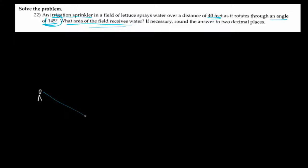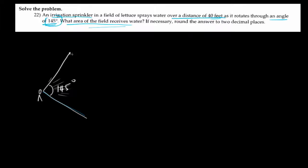Let's say this is an irrigation sprinkler. So it begins to spit out water. We're told that it sprays the water over a distance of 40 feet as it rotates through an angle of 145 degrees. So let's say it starts from here, begins to spit water in this direction, and keeps on going — spitting it until it has covered 145 degrees. Something like this. So at this stage, it has covered 145 degrees, then it comes back again — to and through.